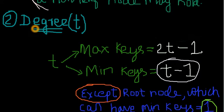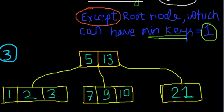When you get degree, you have two things: maximum keys that a node can hold, and minimum keys that a node can hold. What is a node? This is a node. What is a key? This is a key.